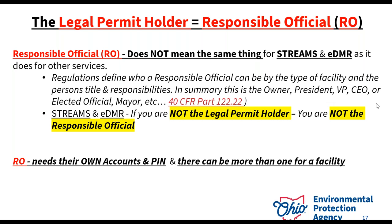Responsible officials need their own accounts and PINs so they can manage their facility and the people under them. There can also be more than one RO — you never have to have only one. Same thing with delegate submitters: you can have as many ROs and delegate submitters as you want, so you won't have issues when it comes time to submit reports and you'll be able to get them in on time.